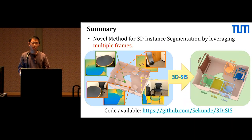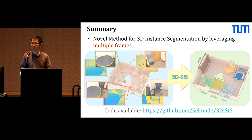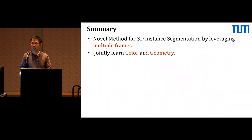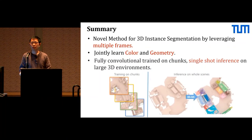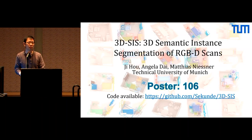In summary, we propose a new approach for 3D instance segmentation that leverages multi-view RGBD data. Our main idea is to jointly learn from color and geometry. Our network is fully convolutional, so we can run in a single shot on large 3D environments in several seconds. Please come to our poster session for more details.